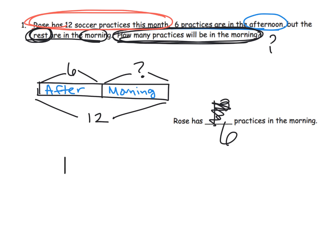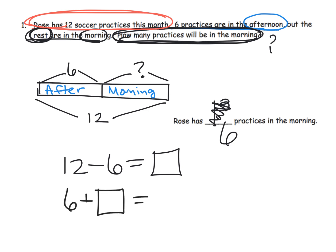The reason I say it could represent subtraction is because other students may want to think of this as an addition problem with a missing addend. Some students might prefer to think of this as 6 plus what equals 12, using addition to solve it, while others will think of it as a part-part-whole where 12 minus 6 equals the missing part.